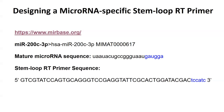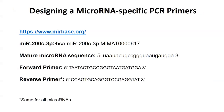Once you develop your stem loop RT primer sequence, you can conduct the cDNA protocol in the next cell block. For the PCR step, the forward primer uses the identical sequence of the mature microRNA with U's replaced by T's. The reverse primer will be the same for any microRNA you're looking at, since it binds to the stem loop portion of the RT primer — this is called the universal reverse primer. So the only primer you need to order new each time is the forward primer, which is specific to your microRNA of interest.